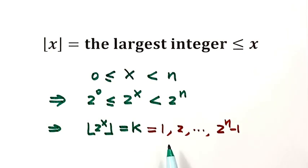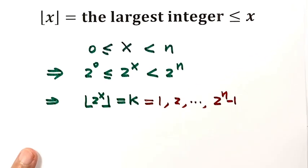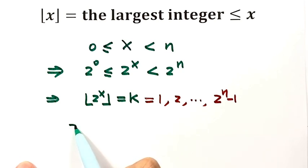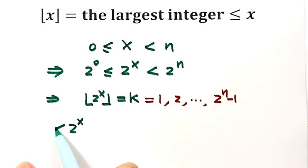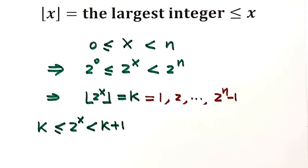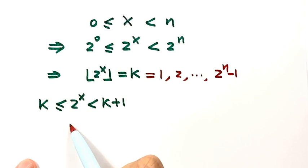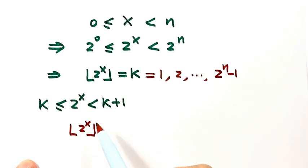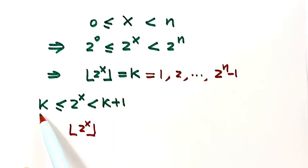Based on this result, we know that 2 to the x is always between two consecutive integers — that is, bigger than or equal to k, and less than k plus 1. Inside this interval, the floor of 2 to the x is constant, and just equals k.